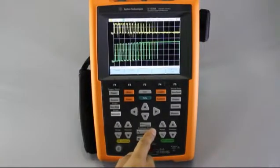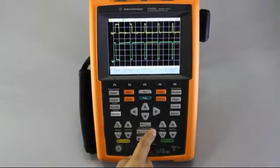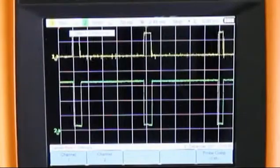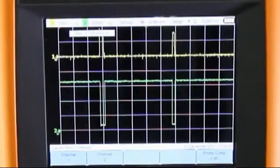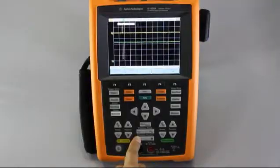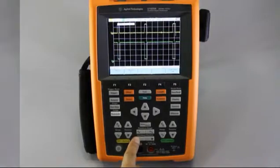With up to two megapoints of memory depth, the U1610A and U1620A handheld scopes can display detailed waveforms without sacrificing the two giga samples per second sampling rate, even in zoom mode.